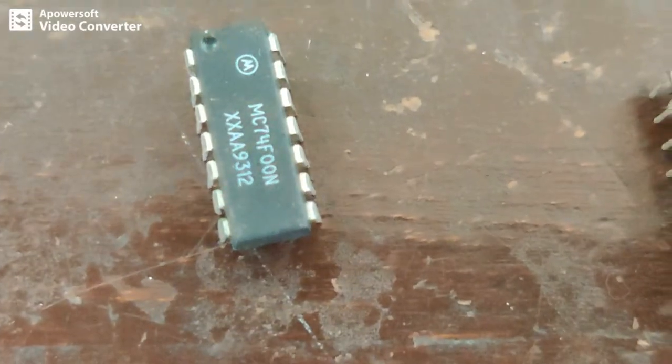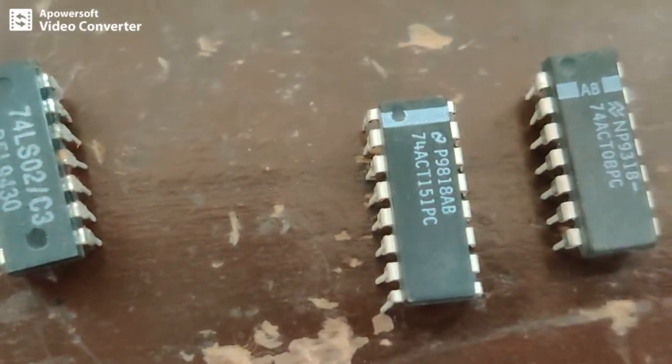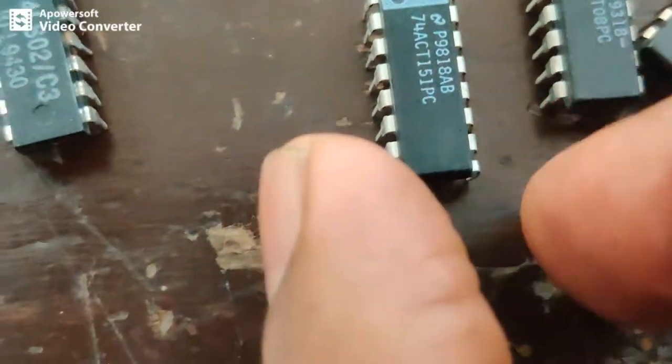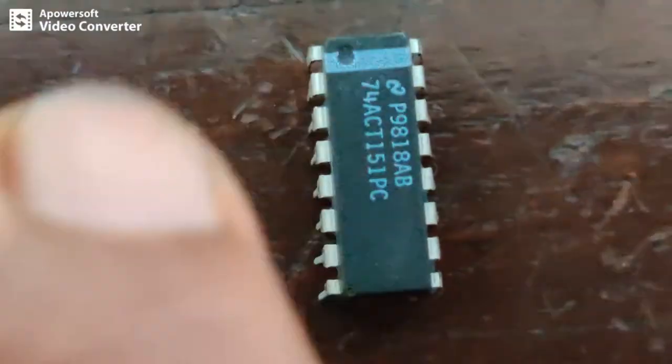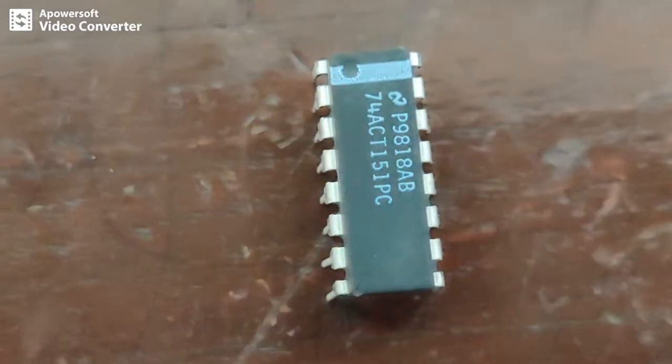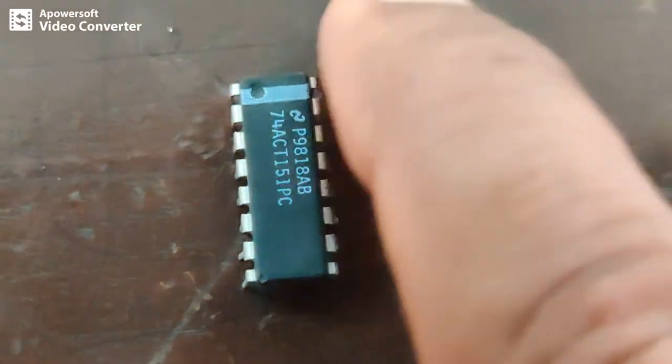Like this we have 16 pin IC also. Here you can see one more IC. This IC is 16 pin IC. Pin number 1 to 8 on one side, and on the other side 9 to 16.